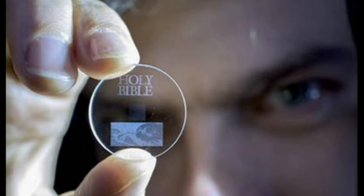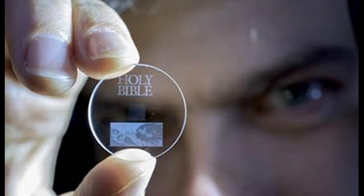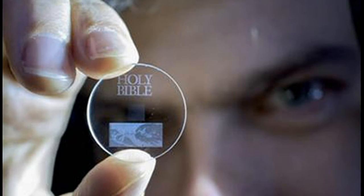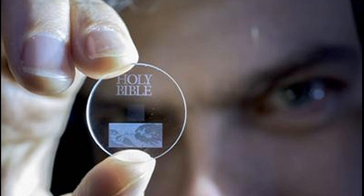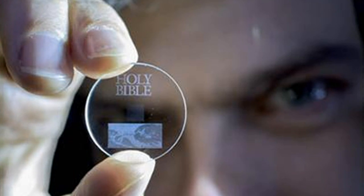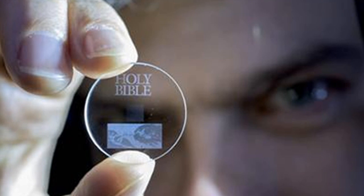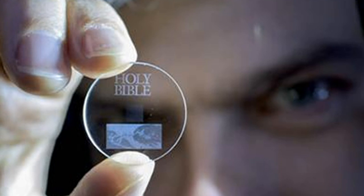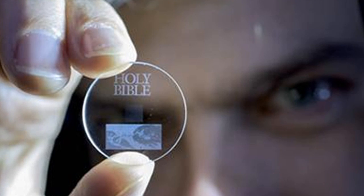Coined as the Superman memory crystal, as the glass memory has been compared to the memory crystals used in the Superman films, the data is recorded via self-assembled nanostructures created in fused quartz. The information encoding is realized in five dimensions: the size and orientation in addition to the three-dimensional position of these nanostructures.